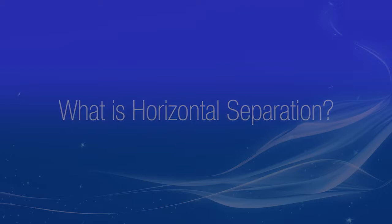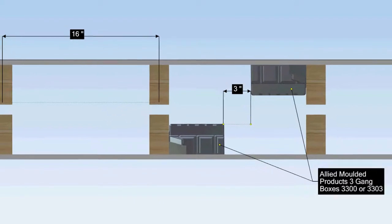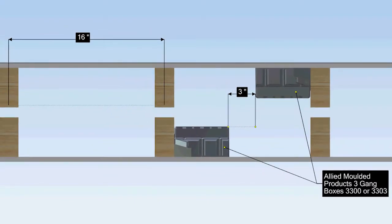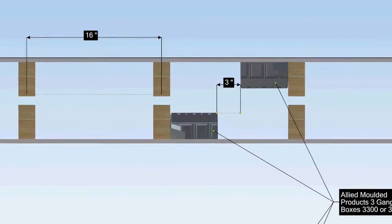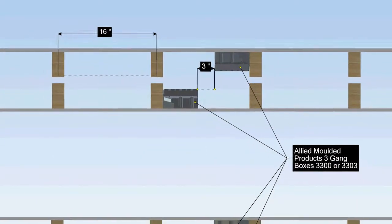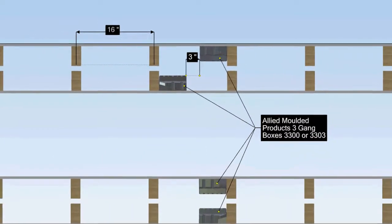Three-inch horizontal separation is achieved when two of our fiberglass boxes are placed horizontally from each other in the same stud cavity. Horizontal separation refers to the location of electrical boxes in a horizontal plane facing adjacent rooms or apartments.